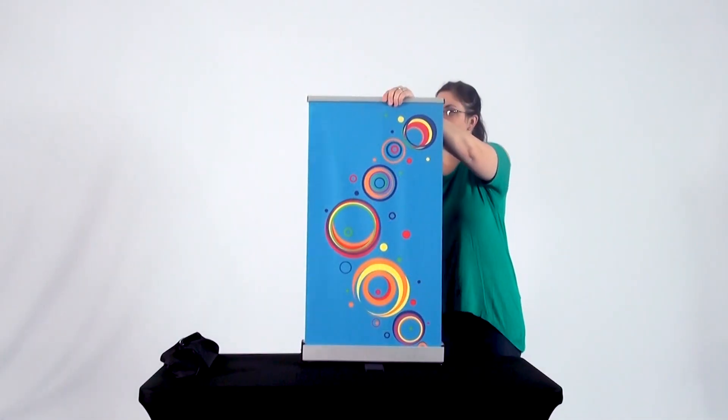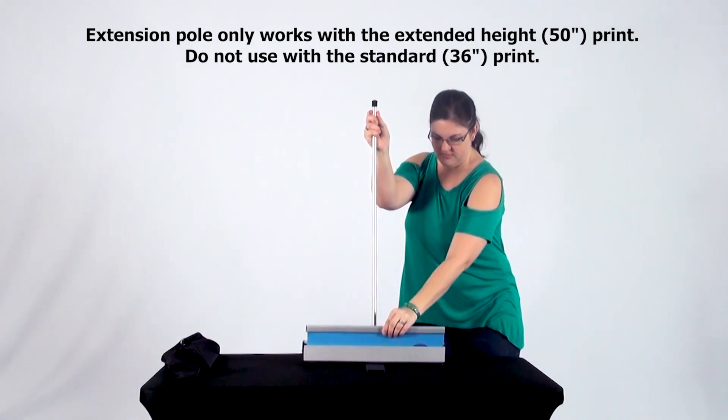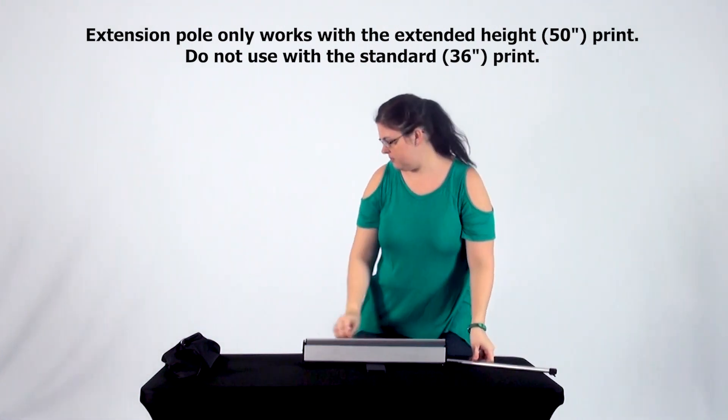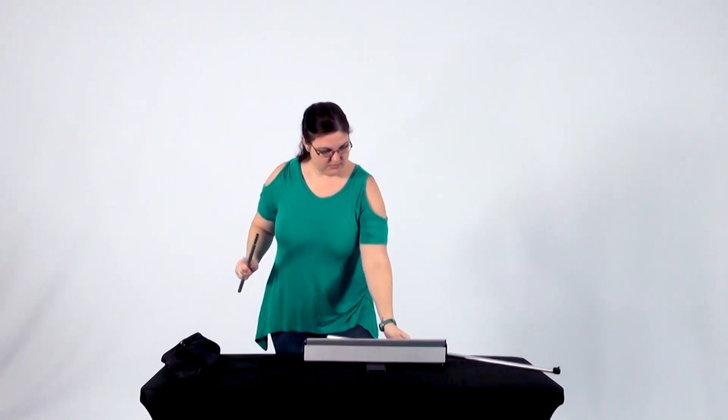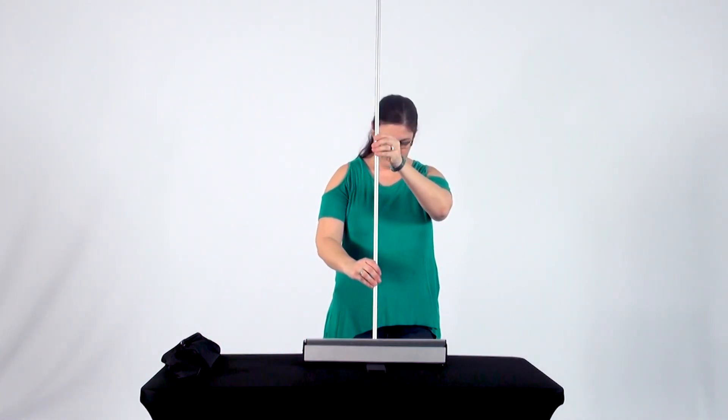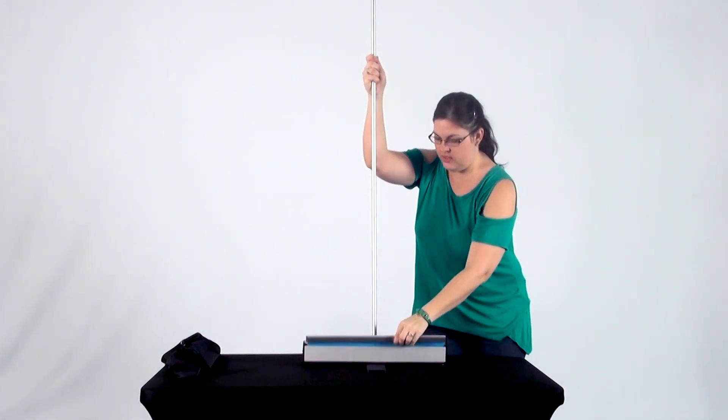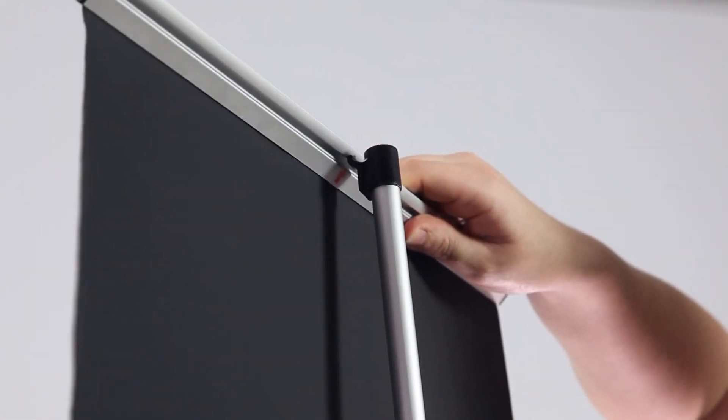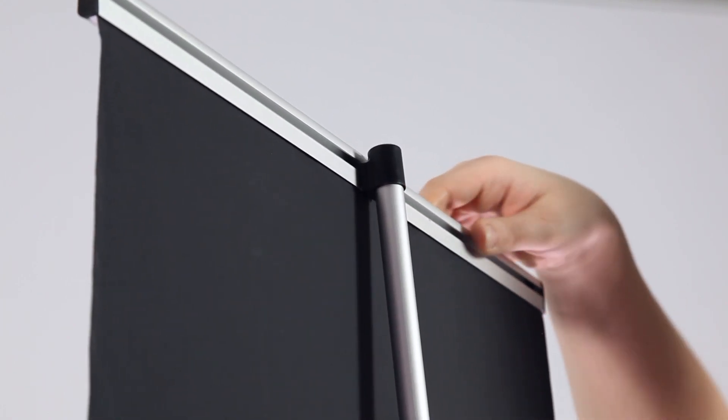To connect the extension bar, disconnect the banner from the support pole and remove the pole from the base. Now, connect the extension bar to the support pole and place back into the base. Roll up your banner and connect the banner's top rail to the black connecting piece on the support pole.